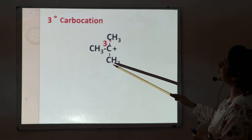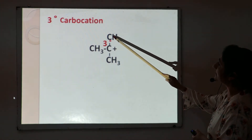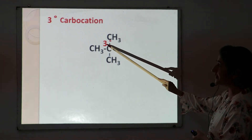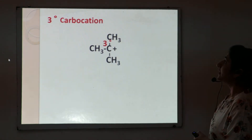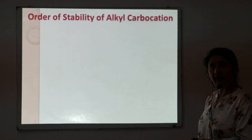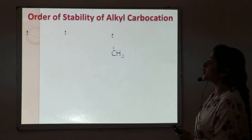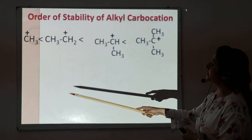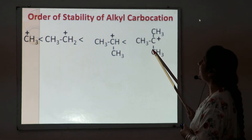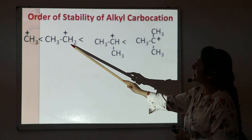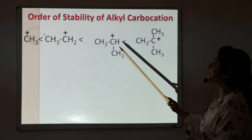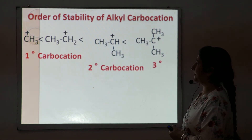The next type is tertiary carbocation. This is an example of tertiary butyl carbocation. In this case, this carbon is attached to three carbon atoms, so it is a tertiary carbon atom, and the positive charge present on a tertiary carbon atom is known as a tertiary carbocation. The order of stability of these alkyl carbocations — we have methyl, ethyl, isopropyl, and tertiary butyl carbocations — shows that tertiary carbocation is more stable than secondary and primary.